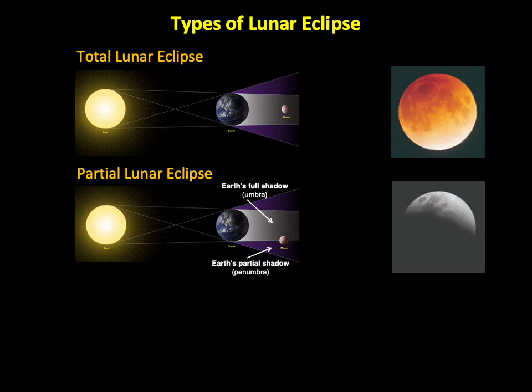We see a partial lunar eclipse when the Moon is partly in the full shadow and partly in the partial shadow. Notice the curvature of Earth's shadow on the Moon, which provides clear evidence that our world is round.